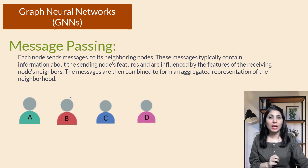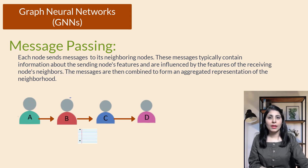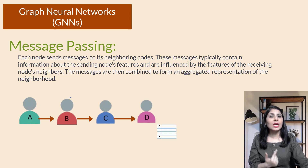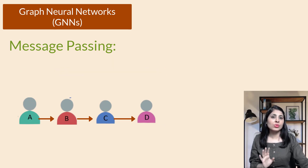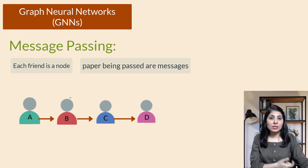Each friend writes down their preferred destination on a piece of paper. The first friend passes their paper to the next friend; each friend reads the paper they receive, adds their own preferences, and passes it to the next friend. This process continues until all friends have added their preferences. The last friend summarizes the collective preferences, and the paper is passed back to the first friend who announces the destination based on the collected preferences.